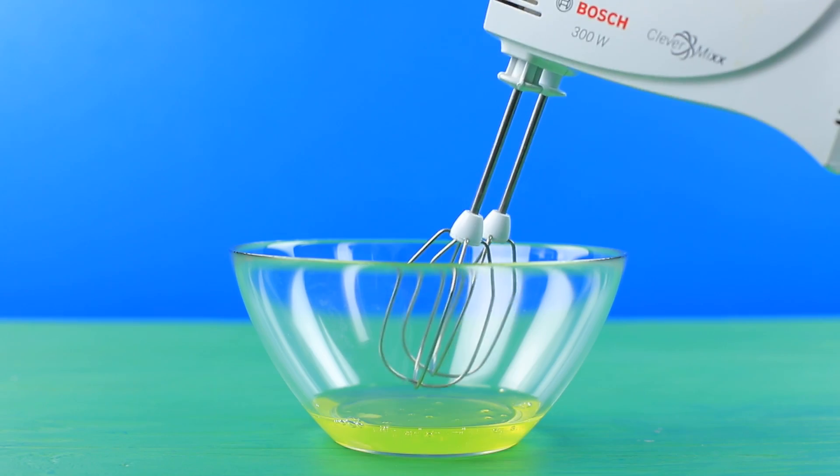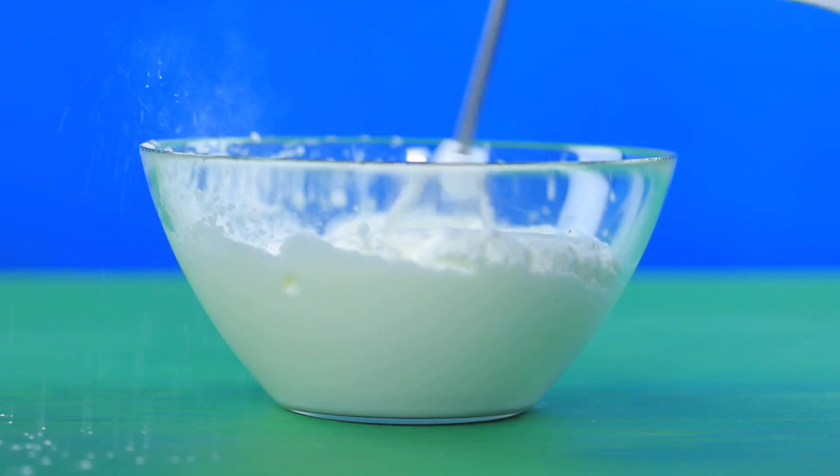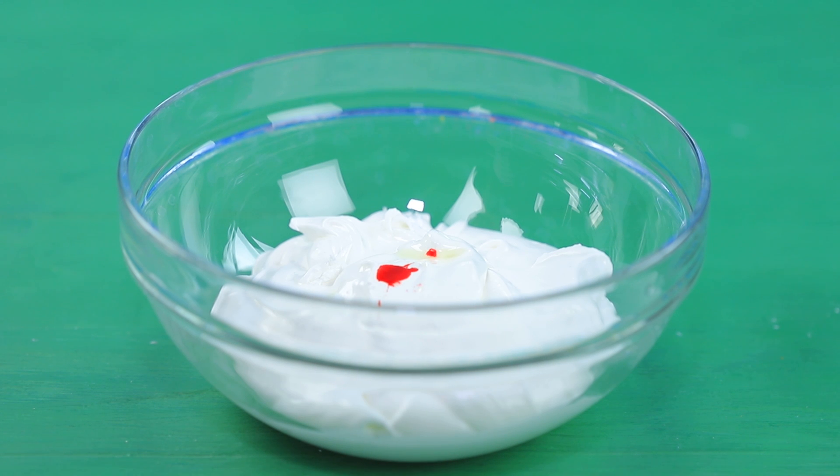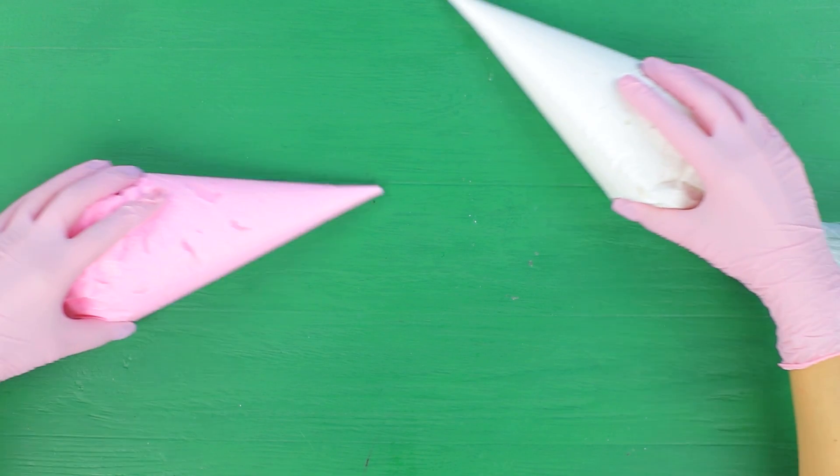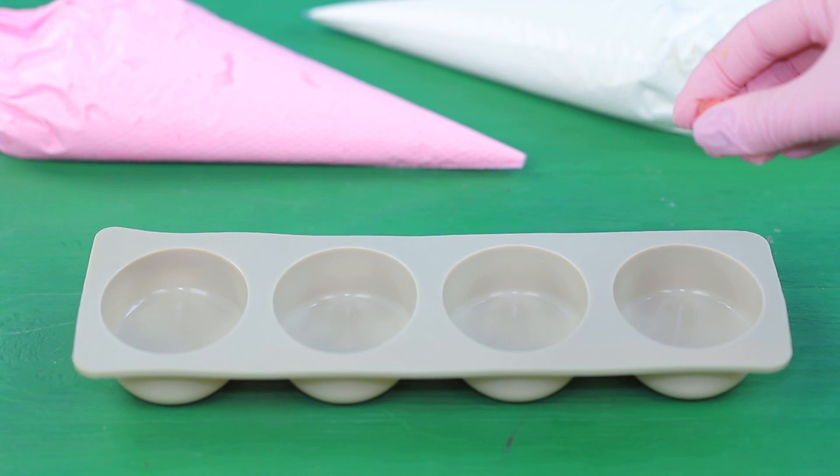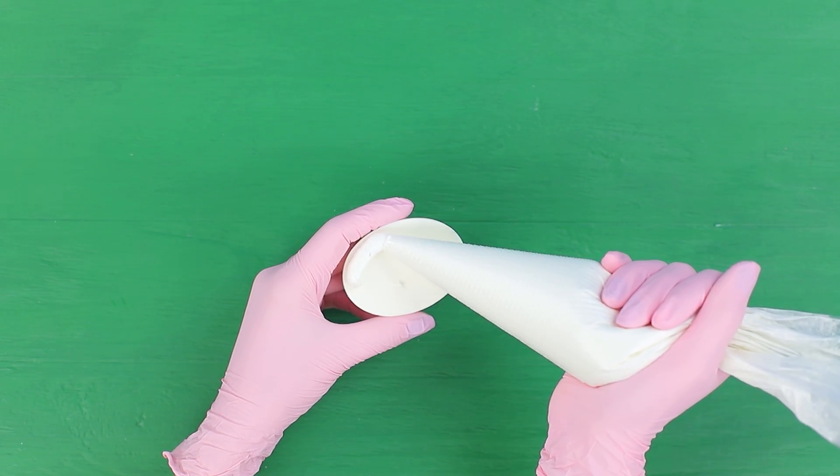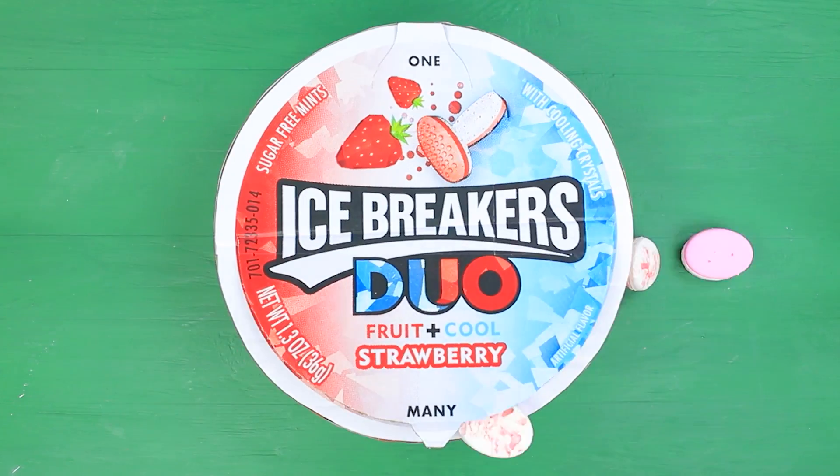Whip three egg whites with a mixer until they are foamy. Keep beating and gradually add 21 ounces of powdered sugar. Separate the meringue mixture in half. Add pink food coloring and strawberry flavoring to one part. Add mint flavoring to the other part. Put the mass into pastry bags. Sprinkle caramel crumbs onto the bottom of the mold and fill it with the icing. Let it harden. Attach the hardened candies to each other with icing. Put the candies into the big box.